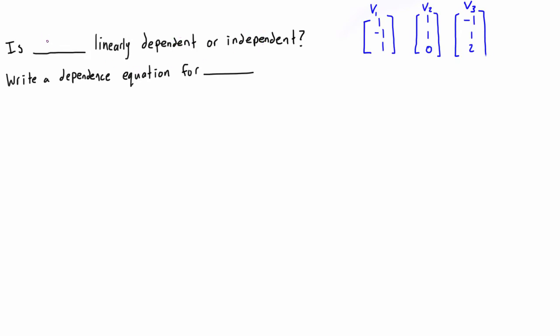This is really just a yes or no question, but the way that we determine if it's yes or no also happens to give us a dependence equation if the vectors are linearly dependent.